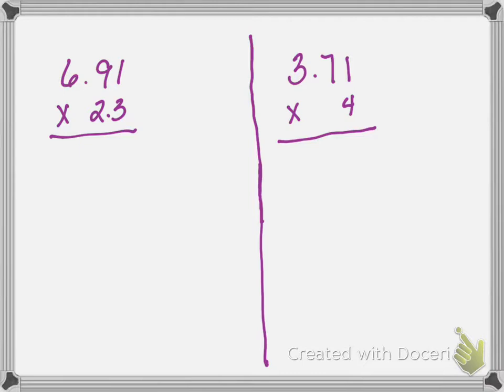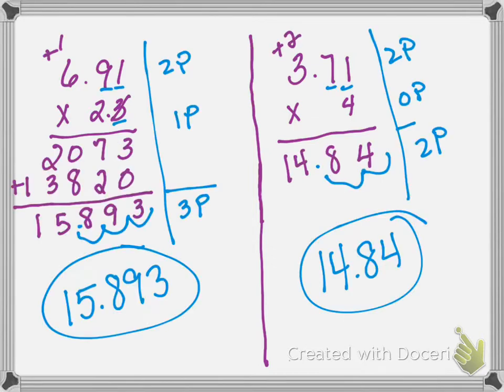Okay, so for the first one, 6.91 times 2.3, your answer should have been 15.893. And for your answer for the next problem, 3.71 times 4, your answer should have been 14.84.